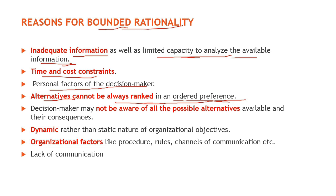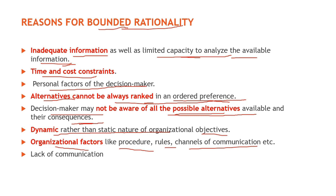Decision maker may not be aware of all the possible alternatives available and their consequences. The dynamic rather than static nature of organizational objectives — jab organization ke uddeshya baar baar badlte rehte hain tab bhi total rationality ka prayog karne mein dikkat aati hai. Organizational factors like procedures, rules, channels of communication bhi decision maker ko best decision lene se rokate hain. Aur last factor hai lack of communication — communication ki kami se ek decision maker best decision nahi le pata balki satisficing decision le pata hai. So these were the reasons for bounded rationality.